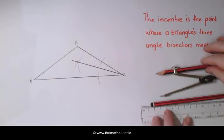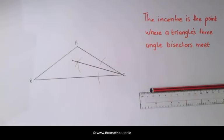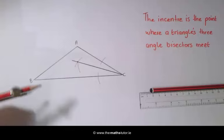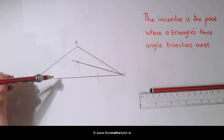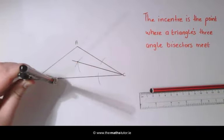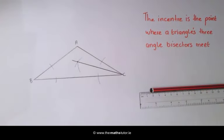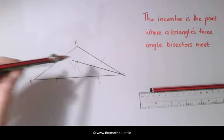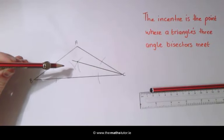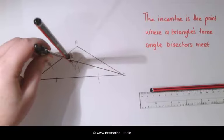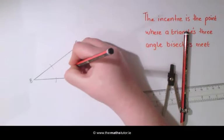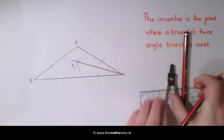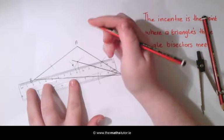We are now going to bisect another angle of the triangle. Placing our compass on B, draw an arc across both arms and draw an interior arc. Without changing the width, do the same on the other side. Mark where these two interior arcs meet and draw a line through it.